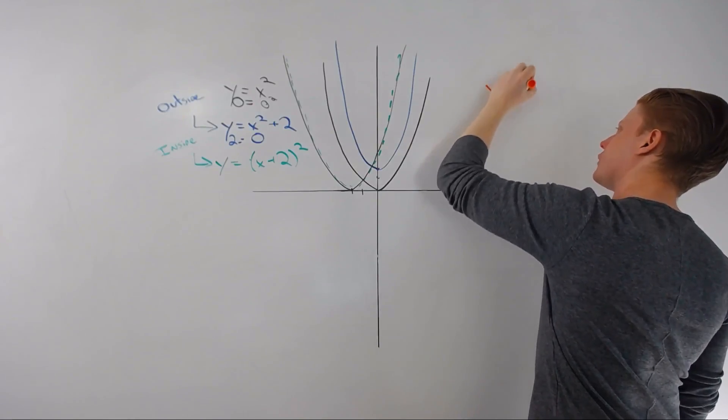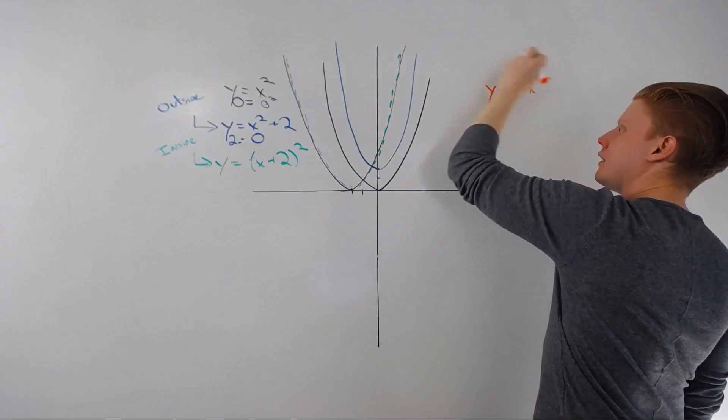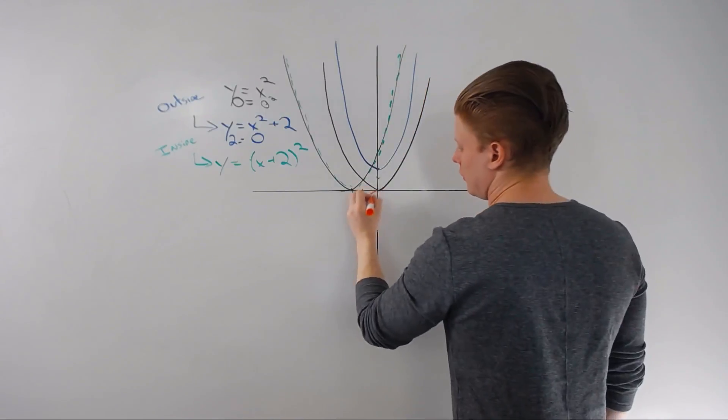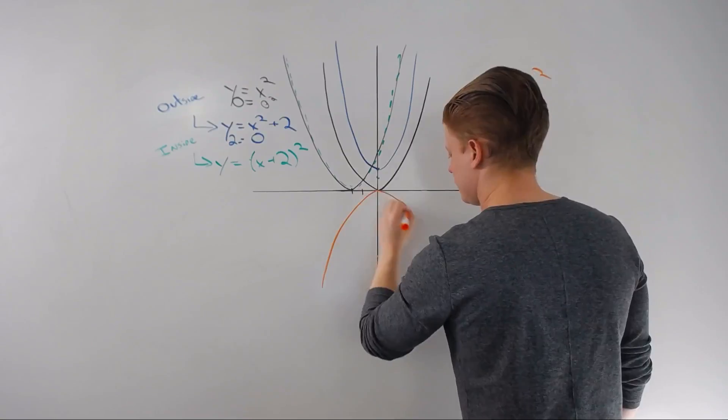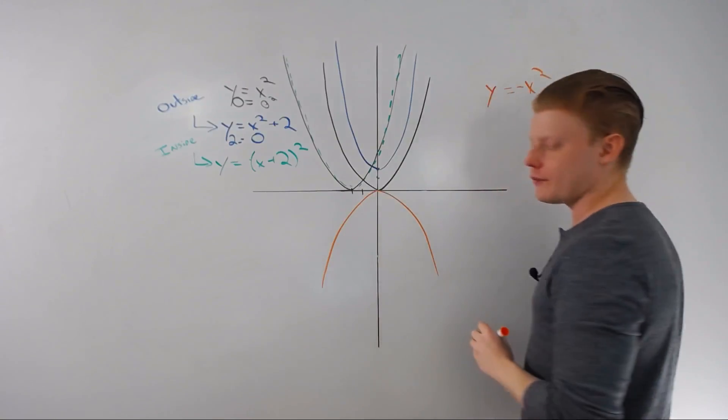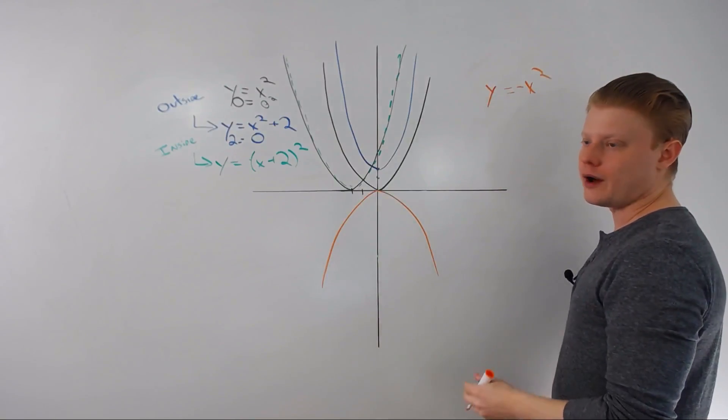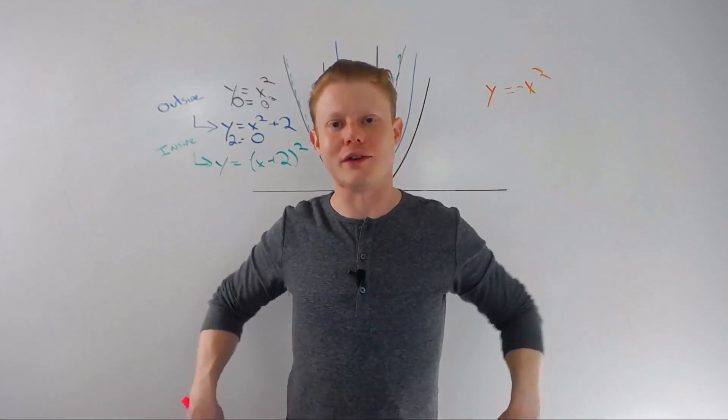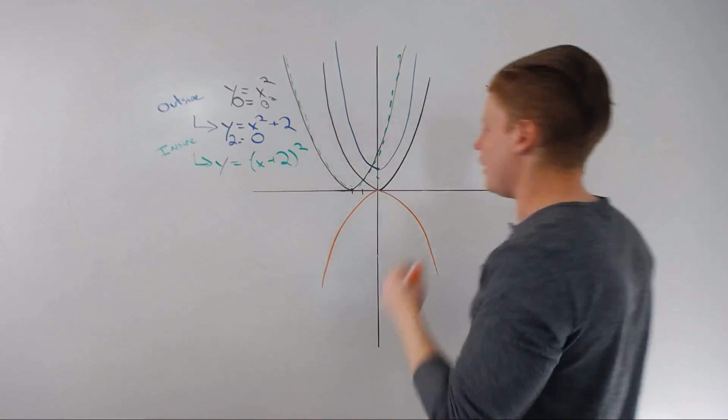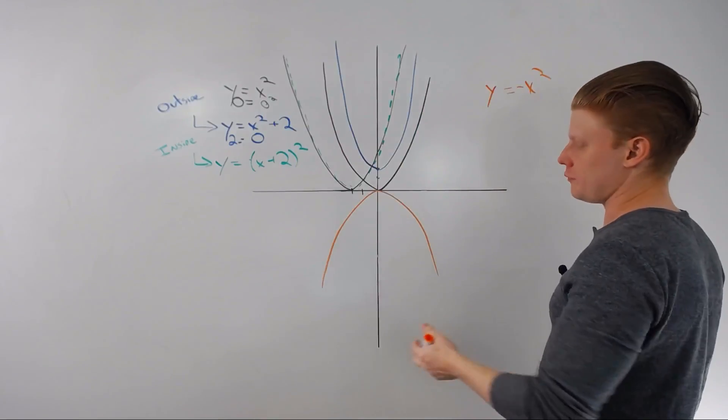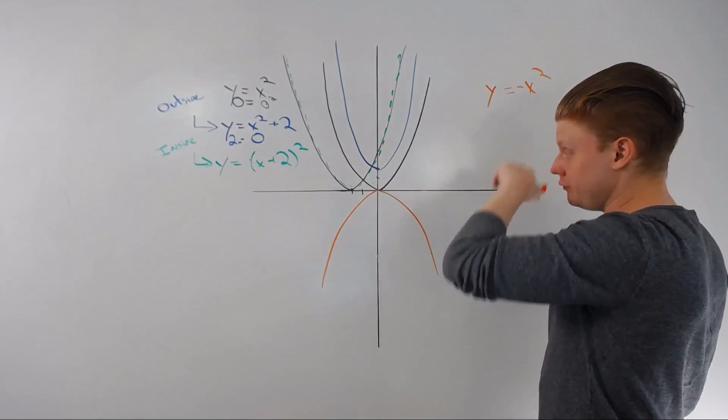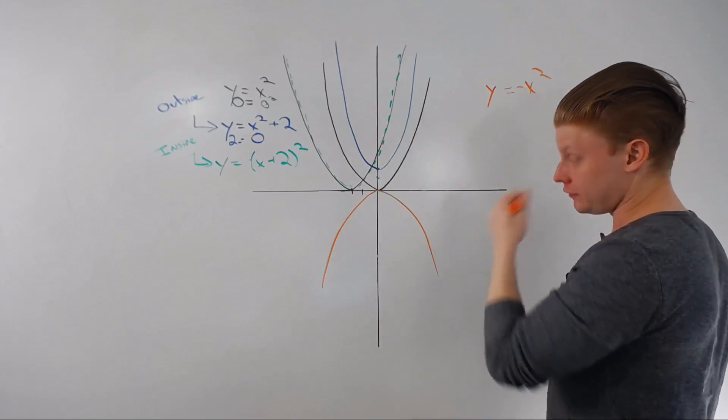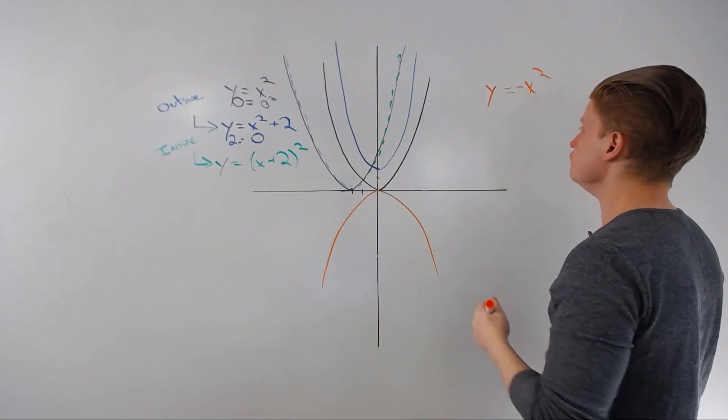So instead of y equals x squared, let's say I have y equals negative x squared. I turn my parabola from a cup to an umbrella. I would flip my absolute value sign or my absolute value v. I would flip my root, everything will get flipped over. I invert it. Still a function, still passes that vertical line test, but it's just flipped over.